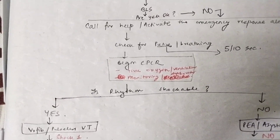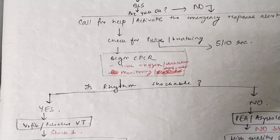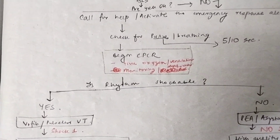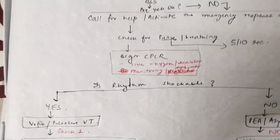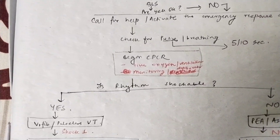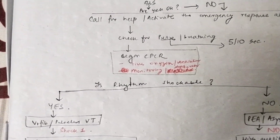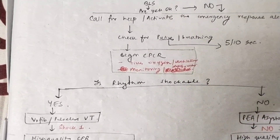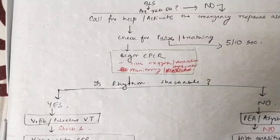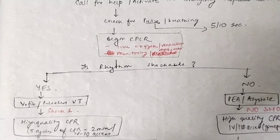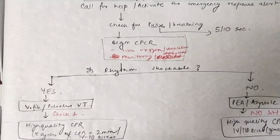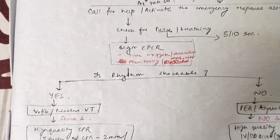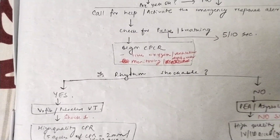If the pulse is absent, the patient has gone into cardiac arrest — begin CPCR immediately. In CPCR, always remember three things: ventilation (mouth-to-mouth, bag-mask, or ventilator), continuous monitoring of the patient (pulse, BP, respiratory rate), and a defibrillator must be available. Then assess: is the rhythm shockable? Ventricular fibrillation is shockable; pulseless electrical activity and asystole are non-shockable.